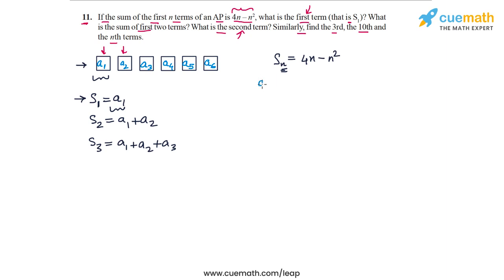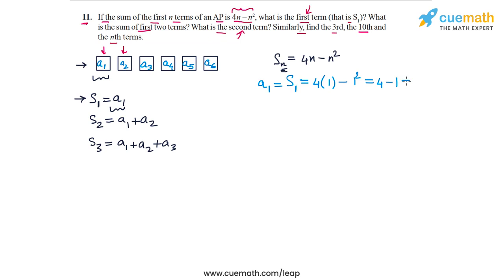The first term A1 is actually nothing but S1, and this is equal to 4 times 1 minus 1 squared, which is equal to 4 minus 1, or 3. So we have found A1 equals 3.